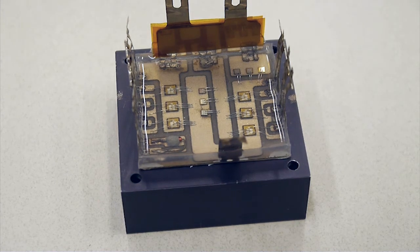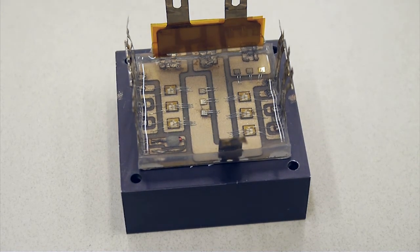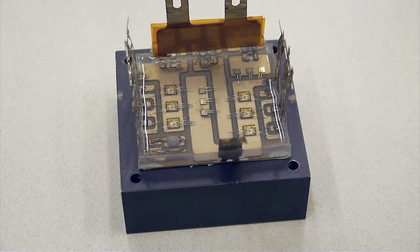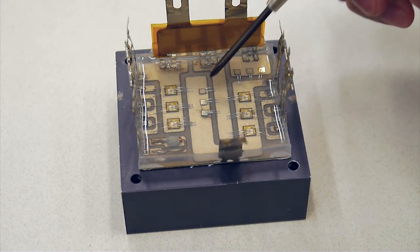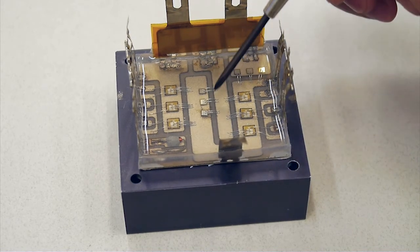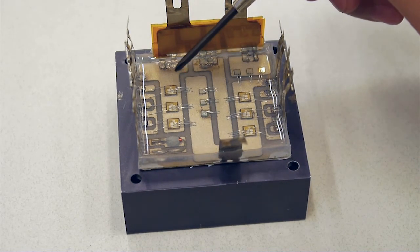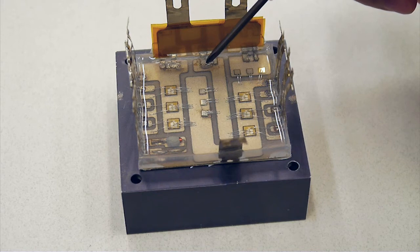So this is a prototype module we're fabricating in our packaging lab. Regarding the substrate layout, you can see that here are three top MOSFETs, and right next to them are three bottom diodes. In this way, we can easily minimize the switching loop inductance.